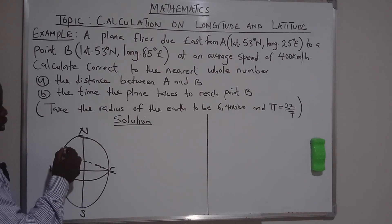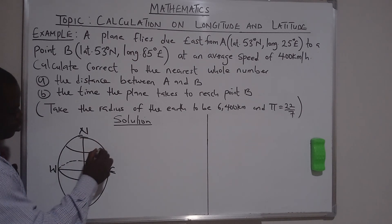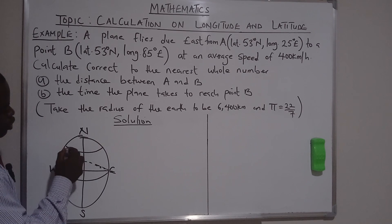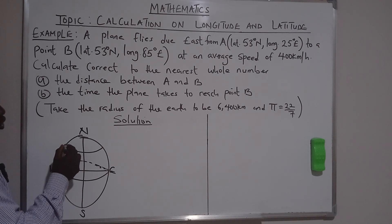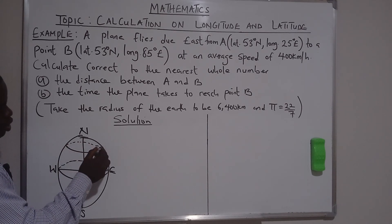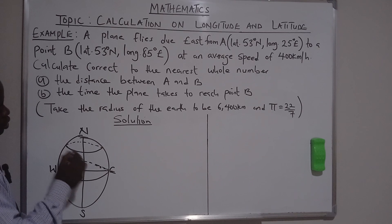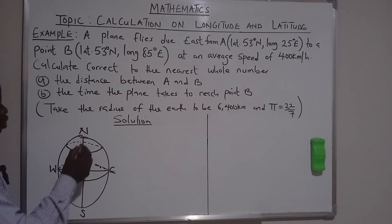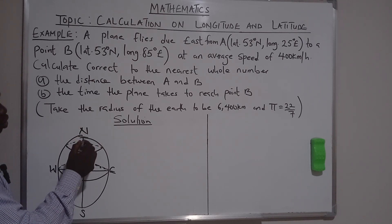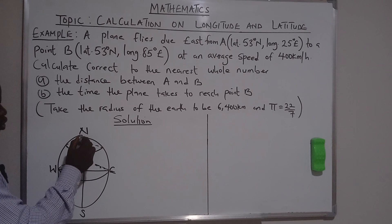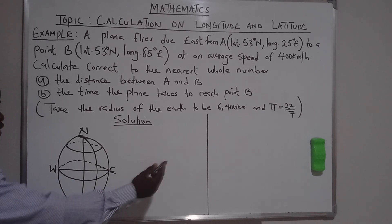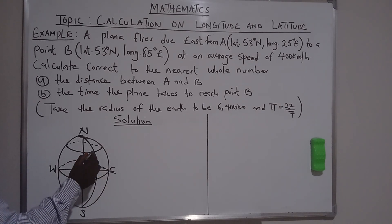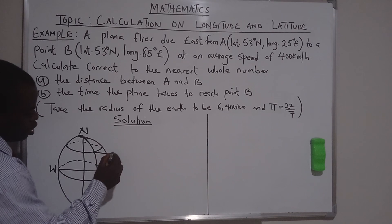For point A, latitude 53 degrees north. To be towards the north, take your dotted line, the imaginary line at the back. It's 53 degrees north. Now, longitude 25 degrees east. Towards the east. East side, west side. Here's your point A.